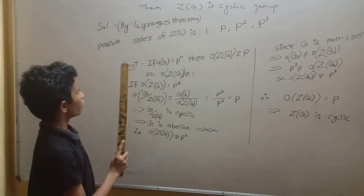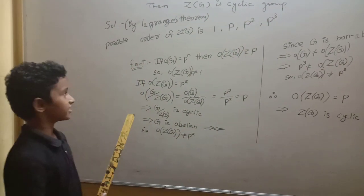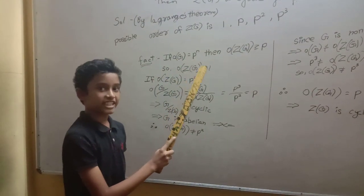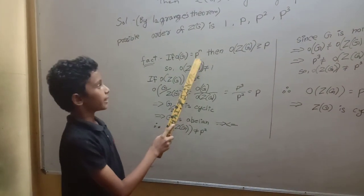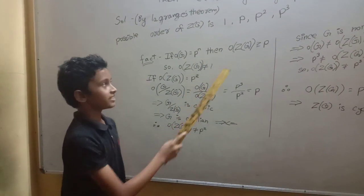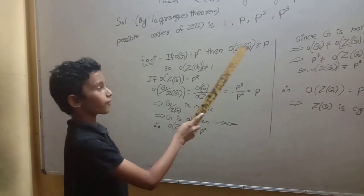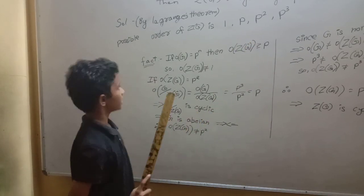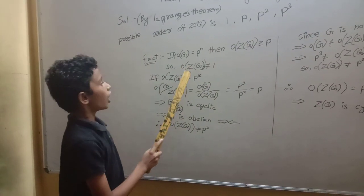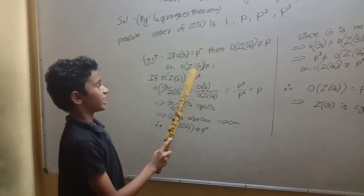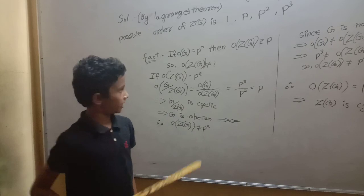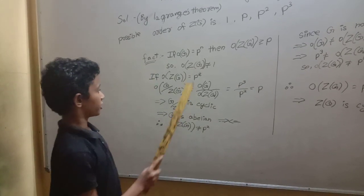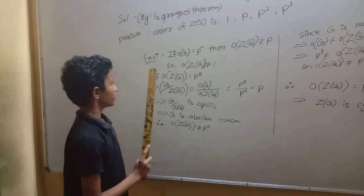We know a fact that if the order of G is equal to P power n, then the order of Z of G is greater than P. According to this fact, the order of Z of G cannot be 1. So, the next possible order is P square.